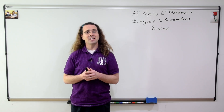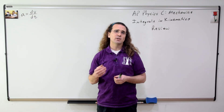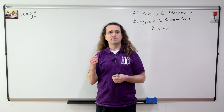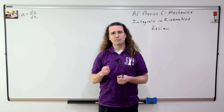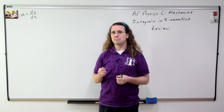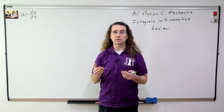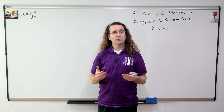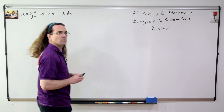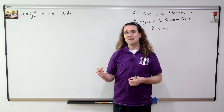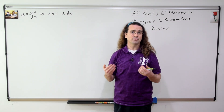The equation for instantaneous acceleration is: acceleration equals the derivative of velocity with respect to time. And remember, every derivative can be rearranged to make an integral or an antiderivative, and we can do that like this — we multiply both sides by dt and then take the definite integral of both sides.